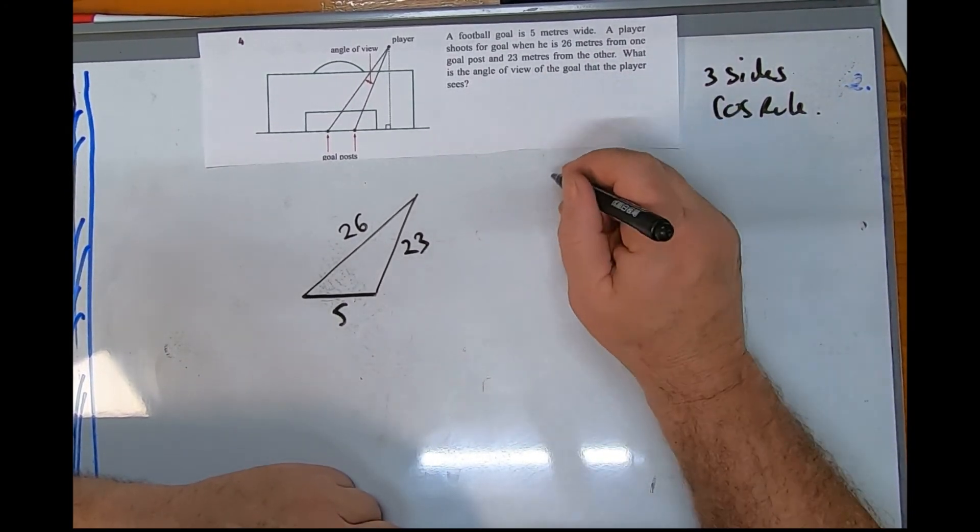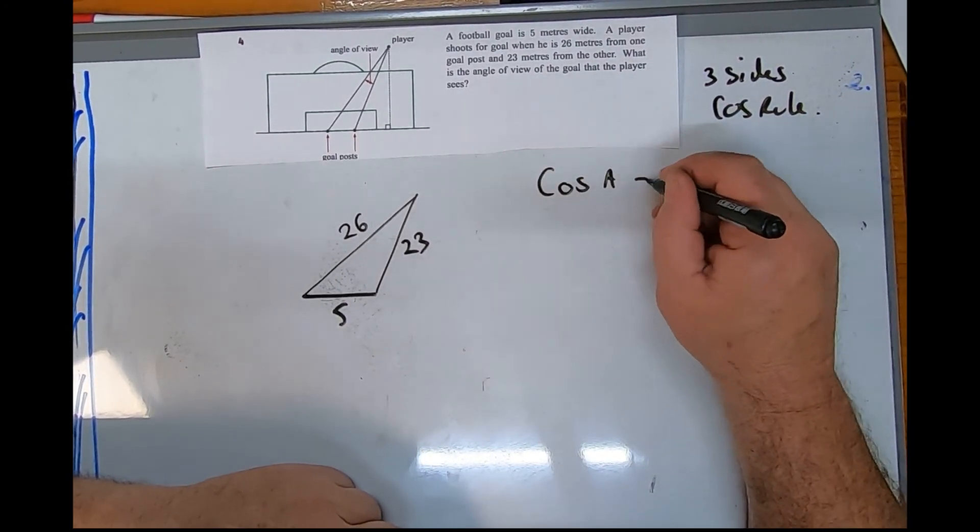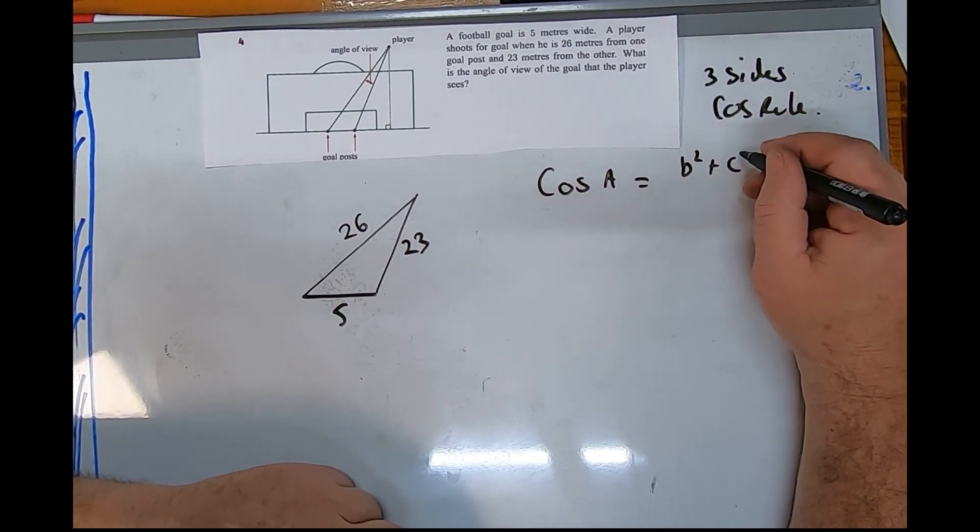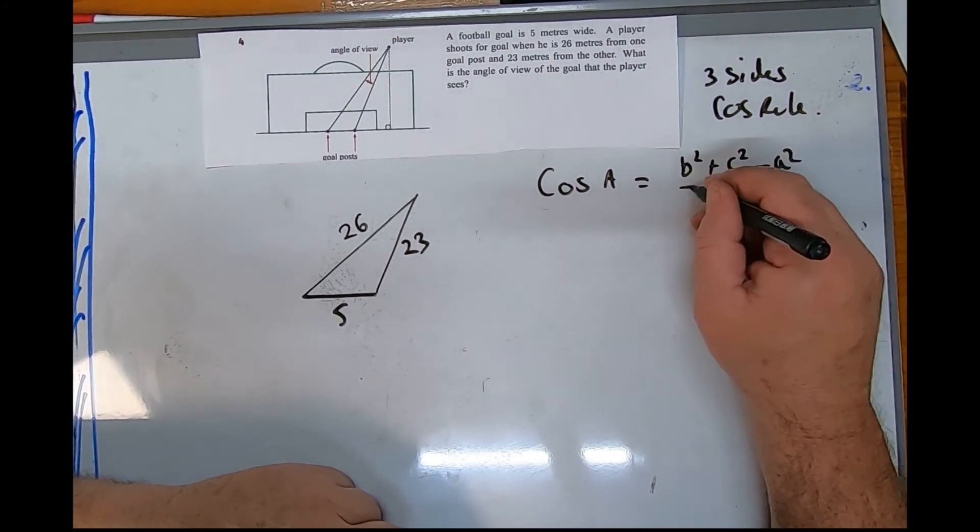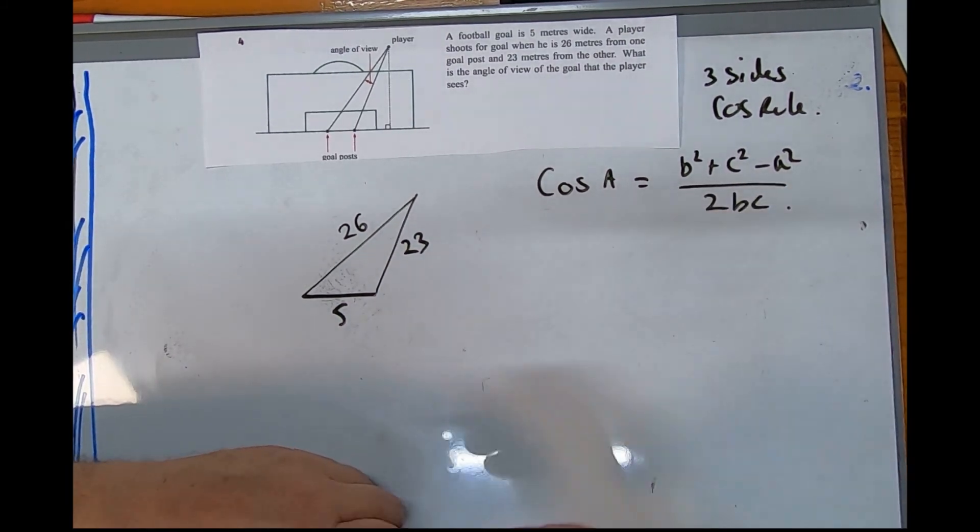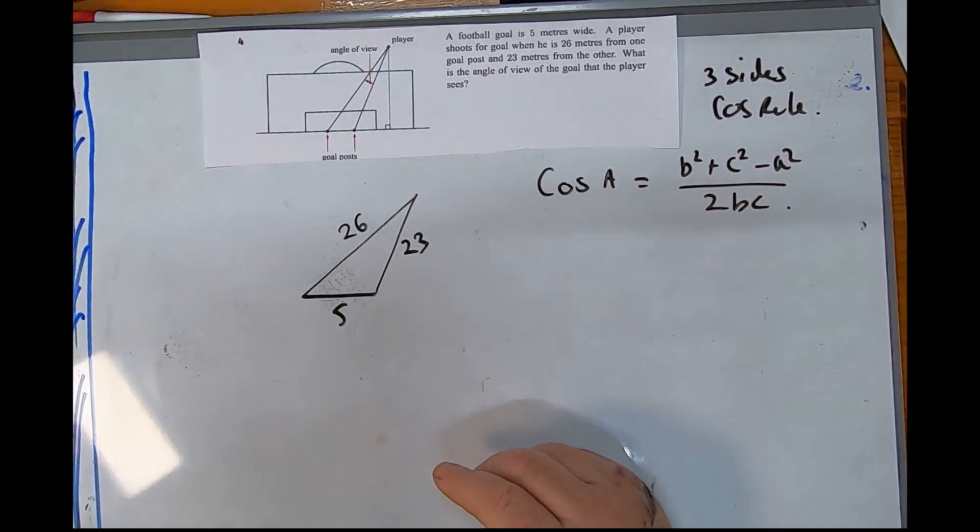What is the angle? So I'm rounding over here. Cos A equals b squared plus c squared take a squared over 2bc. Now the thing is I need to label it.